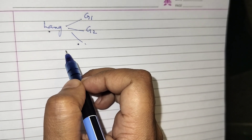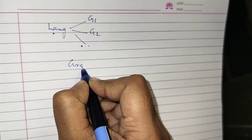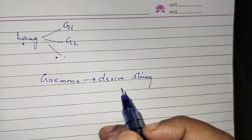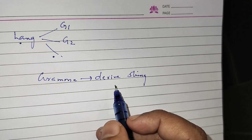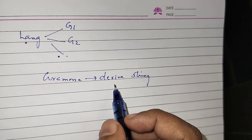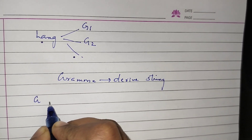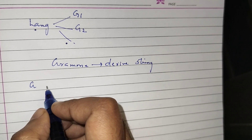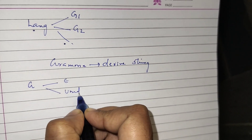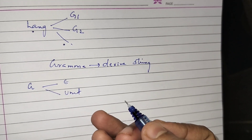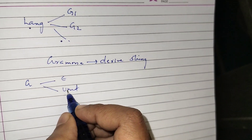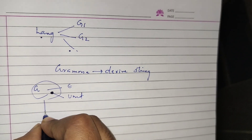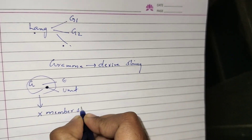The way we represent a grammar is going to have a lot of impact when we are doing derivation. If we are going to derive a string, the representation of a particular grammar is very important. A context-free grammar should not contain null productions (epsilon productions) or unit productions. If a grammar has null productions or unit productions, that grammar is not suitable for the membership algorithm.